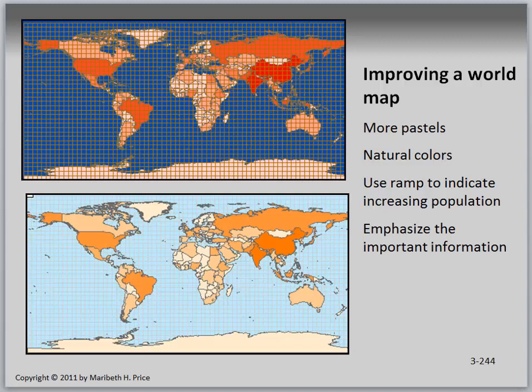Improving a map: the top example is bad, the bottom is better. Use more pastels and natural colors, use a color ramp to indicate increasing population, and emphasize the important information. In the improved map, the blue water makes much more sense, and the grid is pushed behind the continents and made much lighter — it provides some directional reference but is not overpowering as it is in the top version.